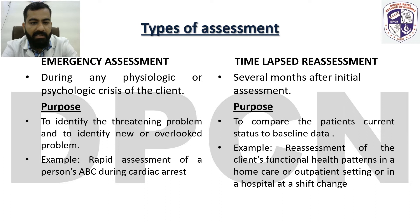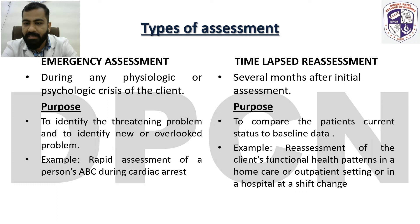Next is emergency assessment. This is done during any physiologic or psychologic crisis of the client. The purpose is to identify life-threatening problems and to identify new or overlooked problems. For example, rapid assessment of a person's ABC — airway, breathing and circulation — during cardiac arrest. The fourth type is time-lapsed reassessment, which is done several months after the patient has been to the hospital. That is called a time-lapsed assessment.